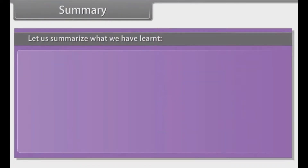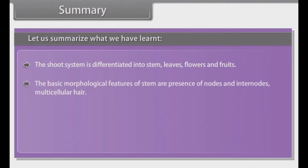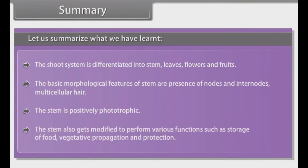In summary, the shoot system is differentiated into stem, leaves, flowers, and fruits. The basic morphological features of stem are the presence of nodes and internodes, and multicellular hair. The stem is positively phototropic. The stem also gets modified to perform various functions such as storage of food, vegetative propagation, and protection.